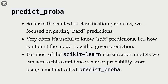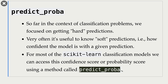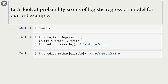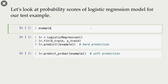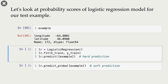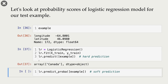In scikit-learn, most of the models have this information, and we can access it using a method called predict_proba. Let's look at probability scores of a logistic regression classifier for our test example. Here is our test example — I'm creating a logistic regression object, fitting it, and this is my hard prediction. When we call predict, we get a hard prediction, and the prediction in this case is Canada.